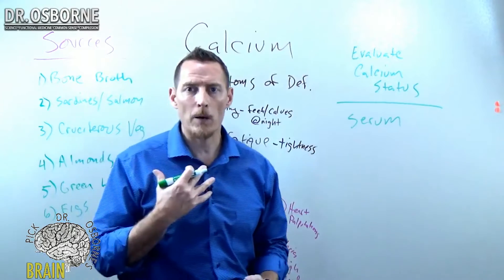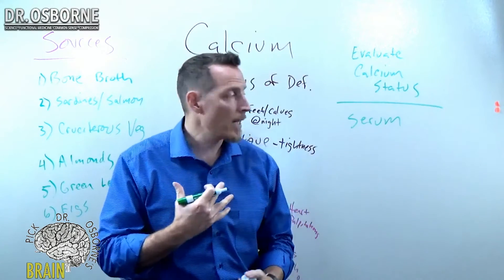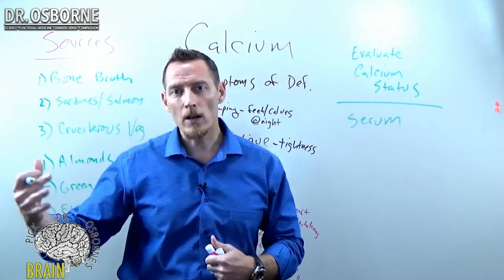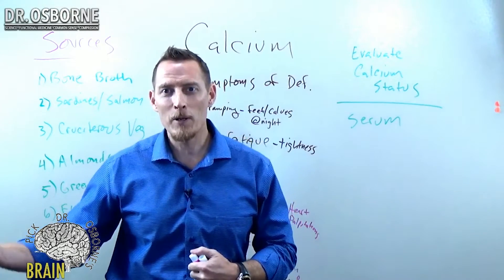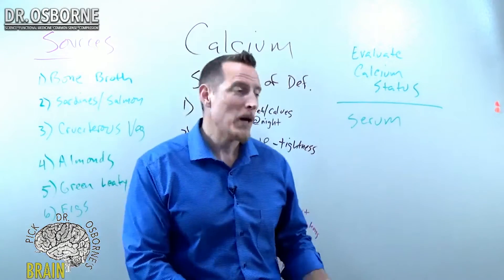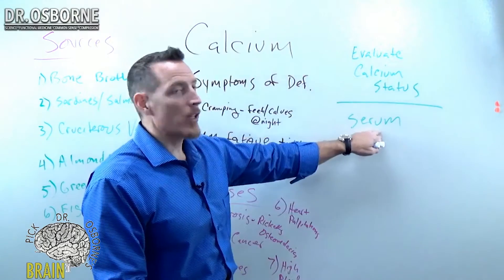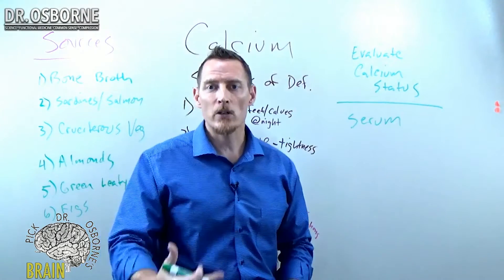It usually means you have a parathyroid problem, but if you have a parathyroid problem, that usually means you have a vitamin D problem. Guess what? If you've got a vitamin D problem, that usually means you have a calcium problem. So it's not a great marker that reflects your intake of calcium per se in your diet.